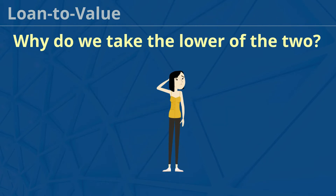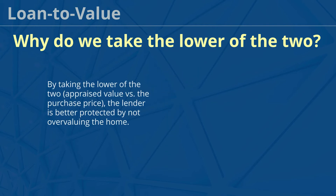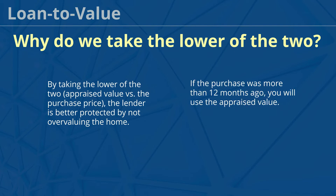Why do we take the lower of the two? By taking the lower of the two — the appraised value or the purchase price — the lender is better protected by not overvaluing the home. Please note, if the purchase was more than 12 months ago, you will use the appraised value.